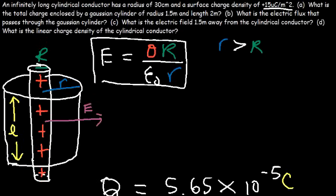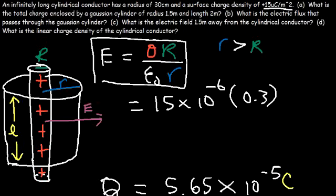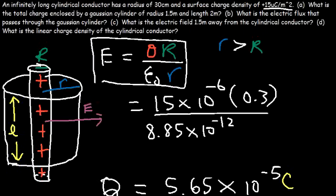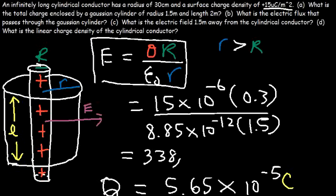Now let's plug everything in: sigma is 15×10⁻⁶, the radius of the cylindrical conductor is 0.3 meters, epsilon-naught is 8.85×10⁻¹², and the radius of the Gaussian cylinder is 1.5 meters. The result is approximately 338,983 newtons per coulomb. Verifying the calculation confirms this answer.